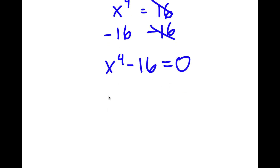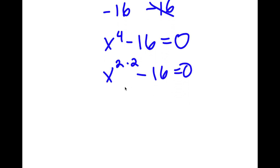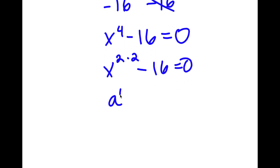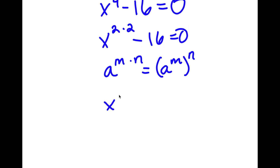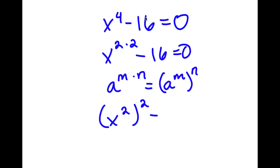Now x to the power of 4, I'm going to write as x to the power of 2 times 2. And if I have something in the form a to the power of m times n, this is equal to a to the power of m to the power of n. So x to the power of 2 times 2, I can rewrite that as x squared to the power of 2 minus 16, which I'm going to rewrite as 4 to the power of 2. This is equal to 0.